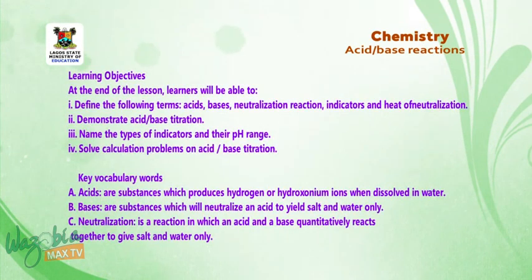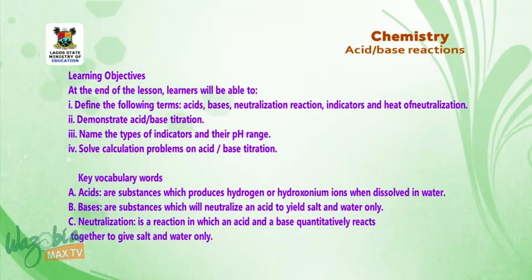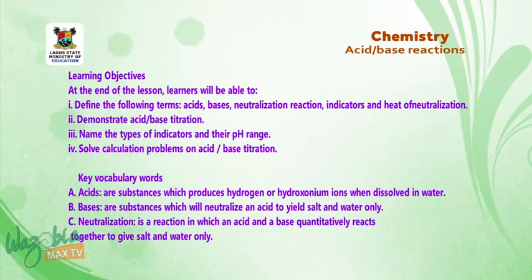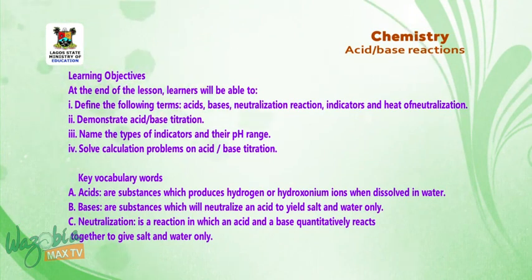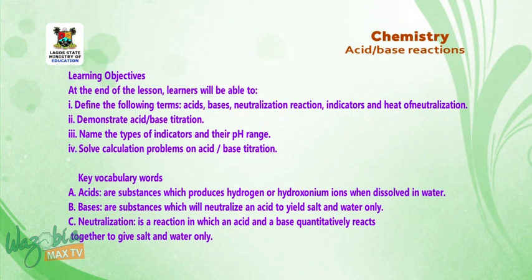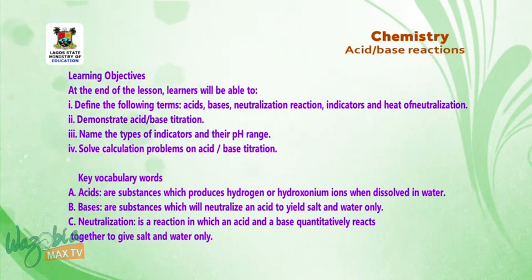Learning objectives for this lesson. At the end of the lesson, learners will be able to: 1. Define the following terms — acids, bases, neutralization reaction, indicators, and heat of neutralization. 2. Demonstrate acid-base titration. 3. Name the types of indicators and their pH range. 4. Solve calculation problems on acid-base titration.